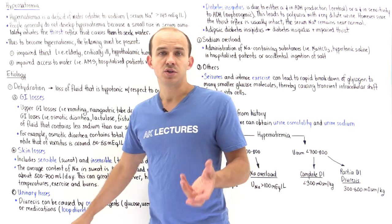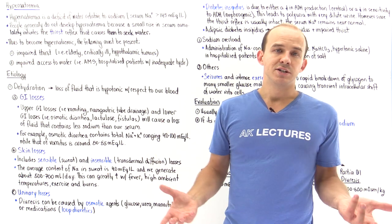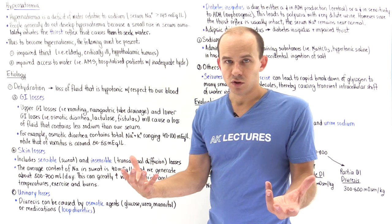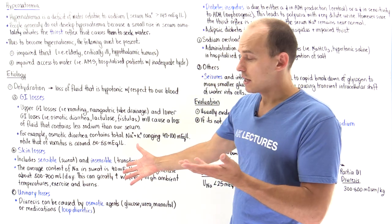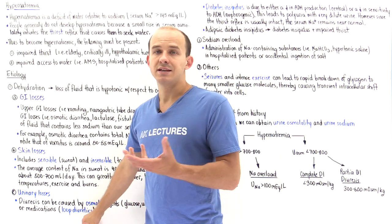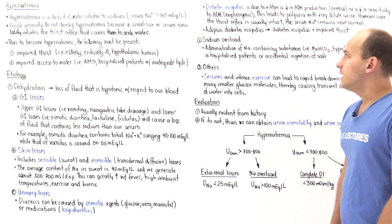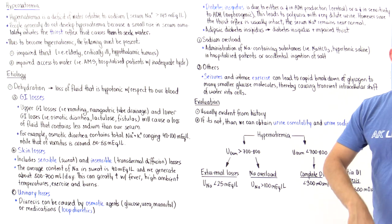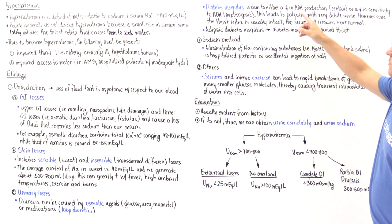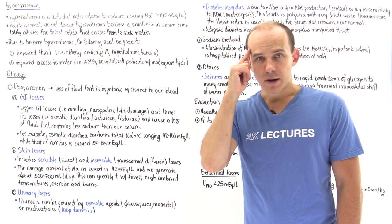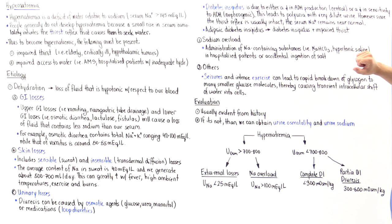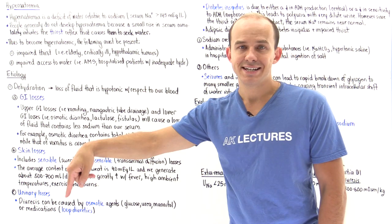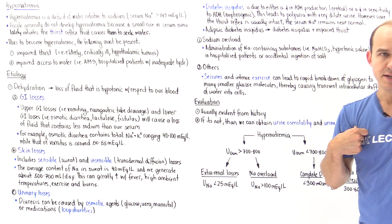We also have medications used to intentionally diurese patients with conditions such as congestive heart failure, cirrhosis, and general fluid overload — one type being loop diuretics. Another cause of diuresis is diabetes insipidus, which results either from decreased ADH production by the brain — central diabetes insipidus — or decreased kidney sensitivity to ADH — nephrogenic diabetes insipidus.